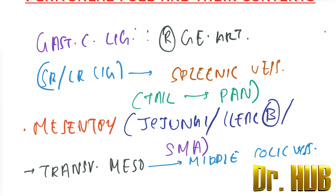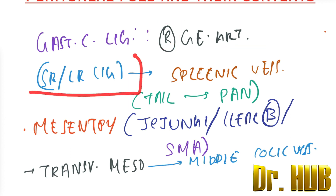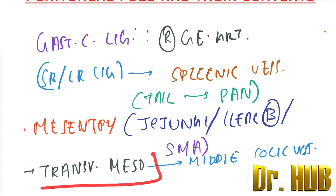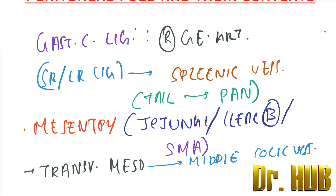So now let's recap. The gastrocholic ligament contains the right gastroepiploic artery. The splenorenal and lienorenal ligament involves the splenic vessels and the tail of the pancreas. The mesentery involves the jejunum and ileal branches of the superior mesenteric artery. The transverse mesocolon involves the middle colic vessels.